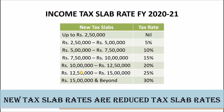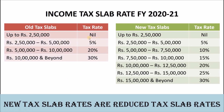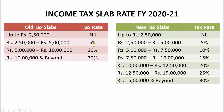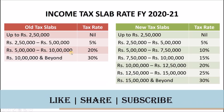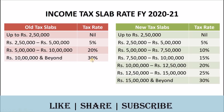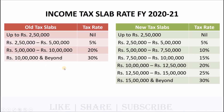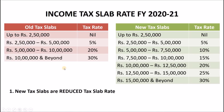The old tax slab rates are: no income tax on income between Rs 0 to Rs 2.5 lakhs; 5% tax on income between Rs 2.5 lakhs to Rs 5 lakhs; 20% tax on income between Rs 5 lakhs to Rs 10 lakhs; and 30% tax on income above Rs 10 lakhs. So as you can see, the new tax slab rates are reduced compared to the old tax slab rates.